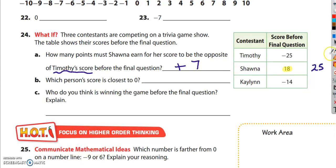Question B reads, which person's score is closest to 0? Some kids think the answer has to be positive or negative. But let's think about it in terms of spaces. Timothy's score is 25 spaces from 0, Shauna's score is 18 spaces from 0, and Kaylin's score is 14 spaces from 0. 14 is the least there, so the person who scores closest to 0 is Kaylin.